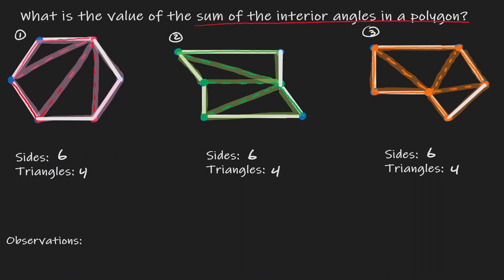One observation we can make is that if we take the number of sides and subtract two, we get the number of triangles we can break this polygon into. In each case, six sides minus two gives us four triangles. So we can say that the number of triangles is equal to the number of sides minus two.